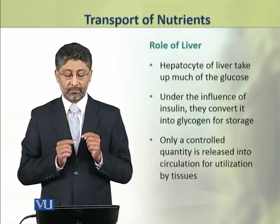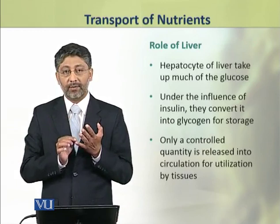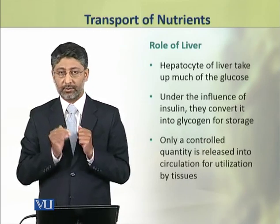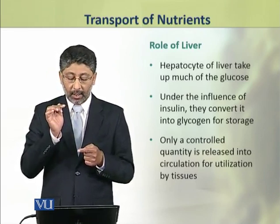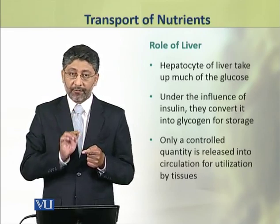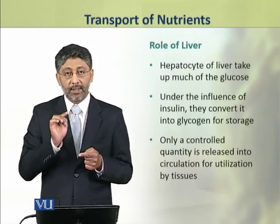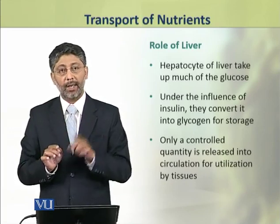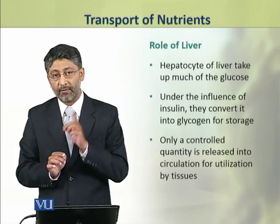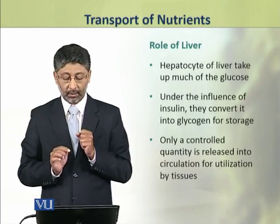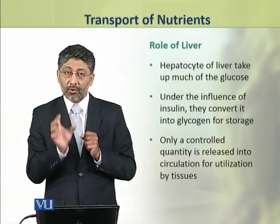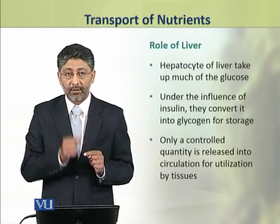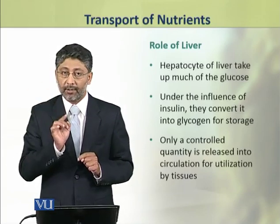In the liver, hepatocytes take up much of the glucose. Under the influence of insulin, these hepatocytes convert this glucose into glycogen and store it in the form of glycogen. Only a controlled quantity of glucose is released into blood circulation for delivery to the cells and tissues.